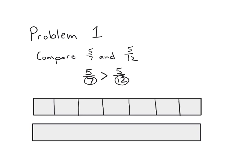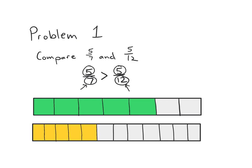I'm going to shade in five of the sevenths. On the bottom, I'll partition the tape diagram into twelfths. Shading in five of the twelve equal parts, we can see it is much smaller than five of the sevenths, because we have the same number of units but sevenths are much larger than twelfths. This problem was simple because the two fractions had a numerator in common.